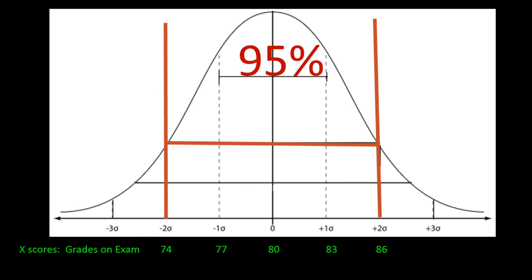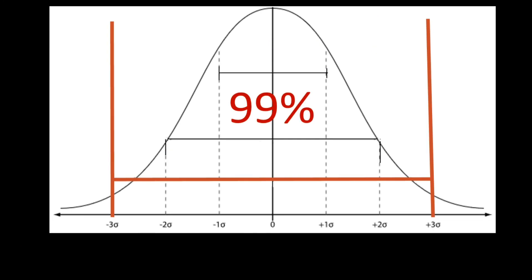Finally, three standard deviations from the mean contains virtually all the data. For the grade data with a standard deviation of three points: 80 plus 3 is 83, plus another 3 is 86, plus another 3 gives us 89 as three standard deviations above the mean. Doing the same below gives us 77, 74, and 71. So for this grade data, virtually everyone in the class scored between a 71 and an 89 on the exam.